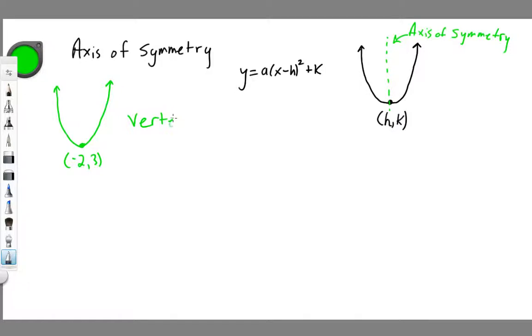The axis of symmetry is x equals negative 2. The axis of symmetry is the x-coordinate of the vertex. So x equals negative 2 represents a line through x equals negative 2. This line right here, that goes through x equals negative 2, represents my axis of symmetry.